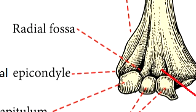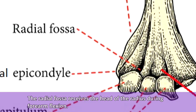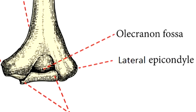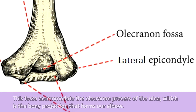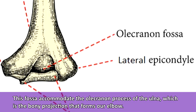Next, we have the radial fossa, located laterally to the coronoid fossa. It receives the head of the radius during forearm flexion. On the posterior side of the humerus, there is a large depression called the olecranon fossa. Whenever you extend your forearm, that depression accommodates the olecranon process of the ulna, which is the bony projection that makes up your elbow.